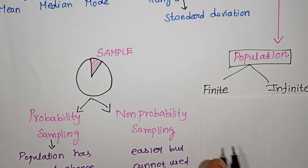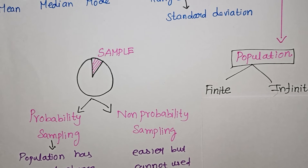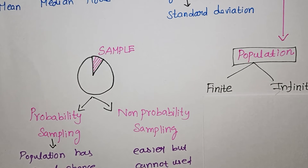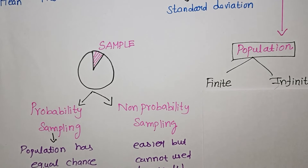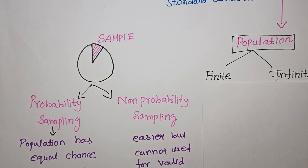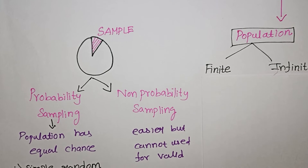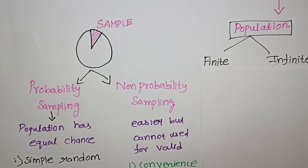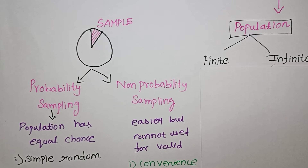Non-probability sampling is easier and more accessible, but it does not always give a valid or correct answer. Probability sampling, specifically random sampling, gives the correct answer.